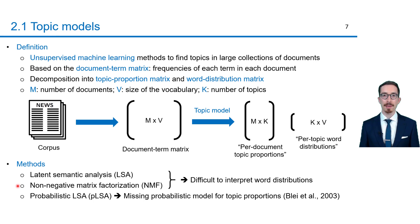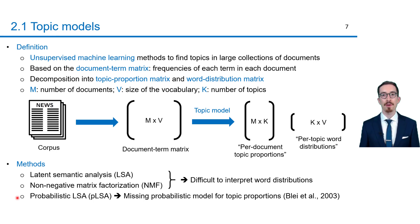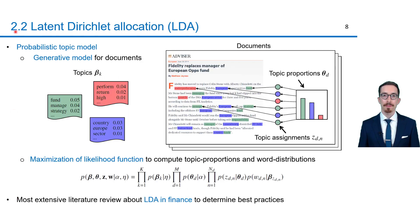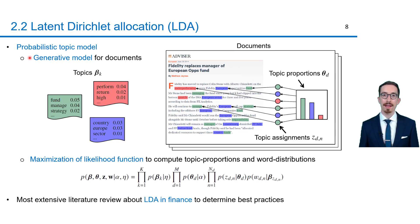Their drawback is mainly the difficulty to interpret word distributions as topics. A second category of methods are probabilistic topic models, like probabilistic latent semantic analysis. This method has, however, no probabilistic model for topic proportions, which leads to further drawbacks. These drawbacks are solved by latent Dirichlet allocation. This method is based on a generative model for documents, which describes how documents are created and formalizes this process in the language of probability.